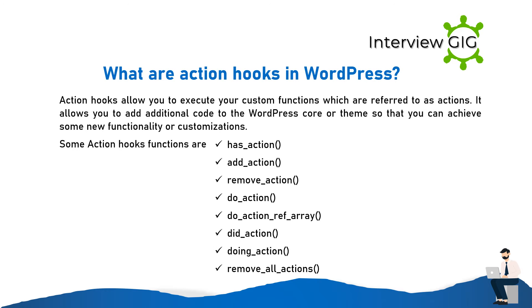What are action hooks in WordPress? Action hooks allow you to execute custom functions, referred to as actions. They allow you to add additional code to the WordPress core or theme so that you can achieve new functionality or customizations. Some action hook functions are: has_action, add_action, remove_action, and do_action.